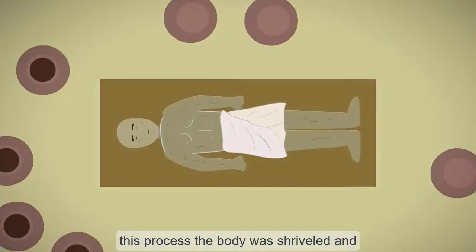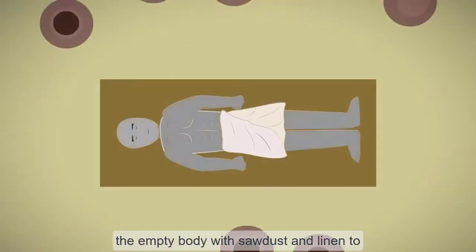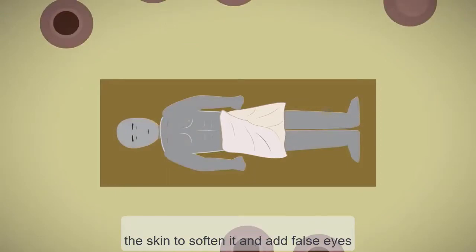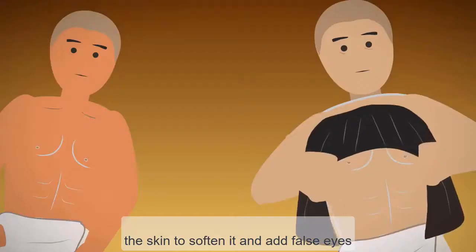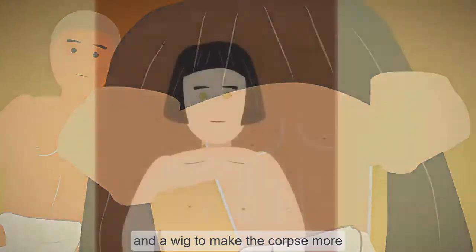After this process, the body was shriveled and dehydrated, so the embalmers would stuff the empty body with sawdust and linen to bring it back to its original shape, oil the skin to soften it, and add false eyes and a wig to make the corpse more lifelike.